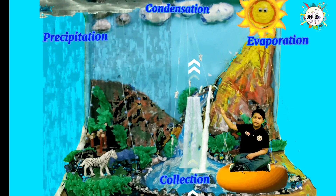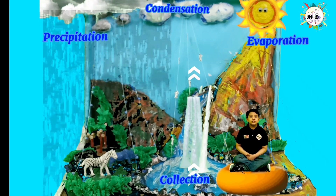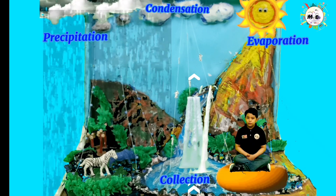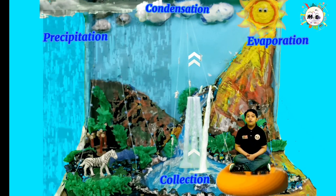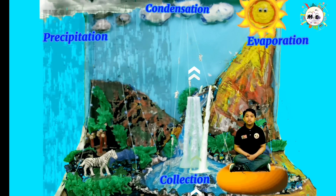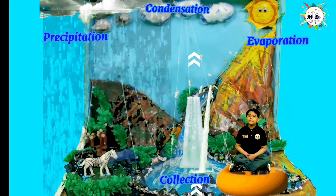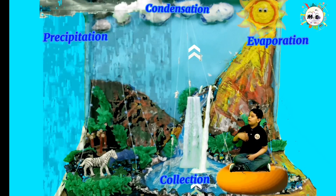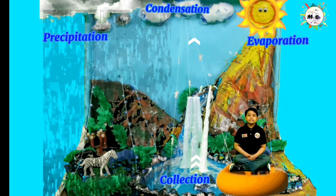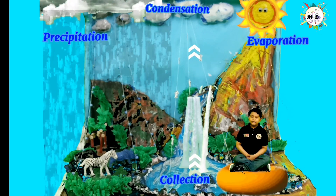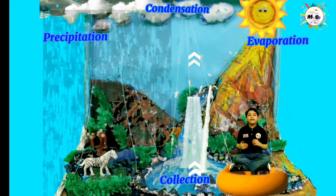Collection: when it rains, water goes back to the bodies of water. Some water goes to the soil, and the water in the soil is absorbed by plants. Once collected, it goes to the bodies of water and undergoes the process of evaporation. On the other hand, water absorbed by plants undergoes transpiration and will start the cycle again.